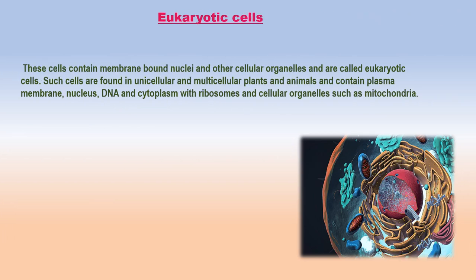Eukaryotic cells. Eukaryotes have advanced and complete cells. These cells contain membrane-bound nuclei and other cellular organelles and are called eukaryotic cells. Such cells are found in unicellular and multicellular plants and animals, and contain plasma membrane, nucleus, DNA, cytoplasm with ribosomes, and cellular organelles such as mitochondria.